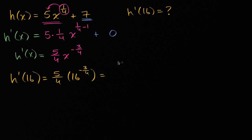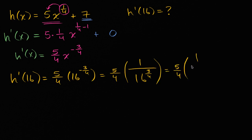That's the same thing as 5/4 times 1 over 16^(3/4), which is the same as 5/4 times 1 over, let's see, I could view this as 16^(1/4) and then cubing that.